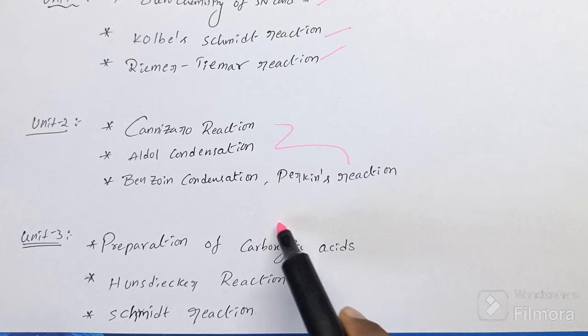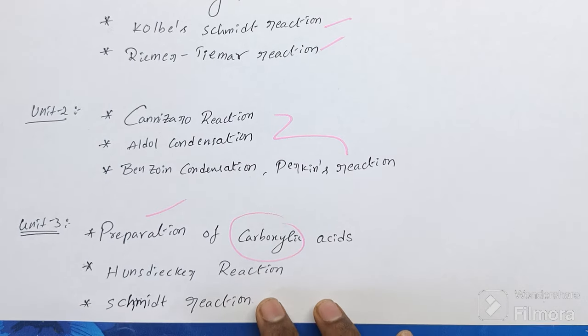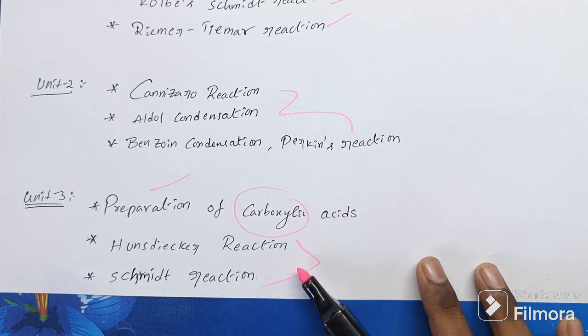In Unit 3, the carboxylic acid used to summon the preparation, these two named reactions are important.